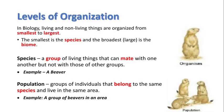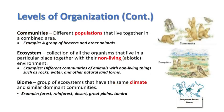If a beaver mates with another beaver, they can produce another beaver. If a beaver tries to mate with a groundhog, nothing is going to happen. Population is a group of living things that belong to the same species, so two or more beavers would be an example of a population.